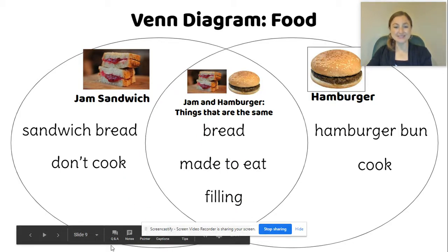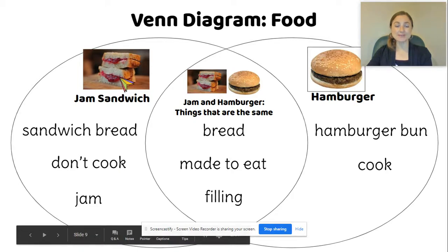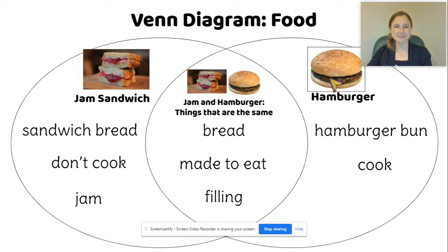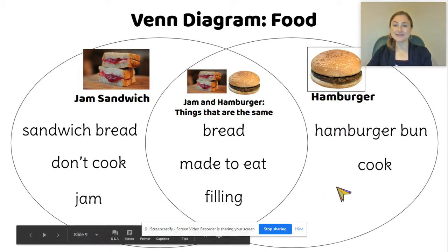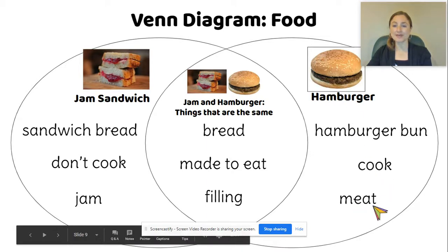But when we look, we can see that there are differences too. The jam sandwich has jam in the middle, and that's special just for the jam sandwich, because we don't see that in the hamburger. Now let's think about the hamburger — the filling in a hamburger is meat, so that's special just for the hamburger, and we have that on this side.